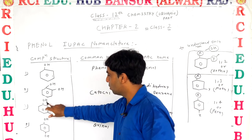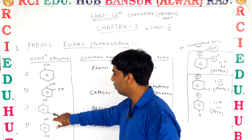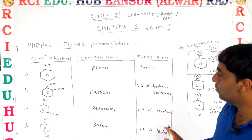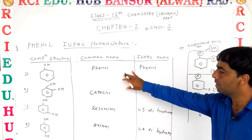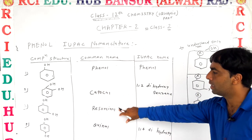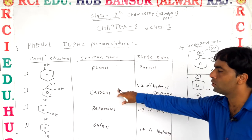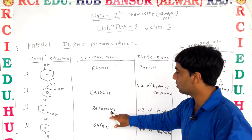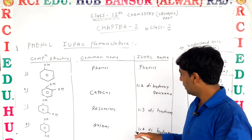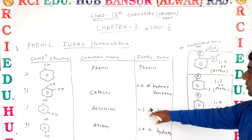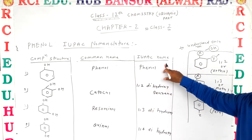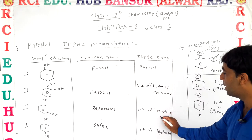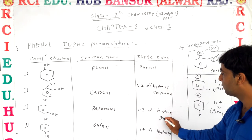The third structure also has two hydroxy substituents, but its common name is different compared to catechol. That is resorcinol. And its IUPAC name is 1,3-dihydroxybenzene.